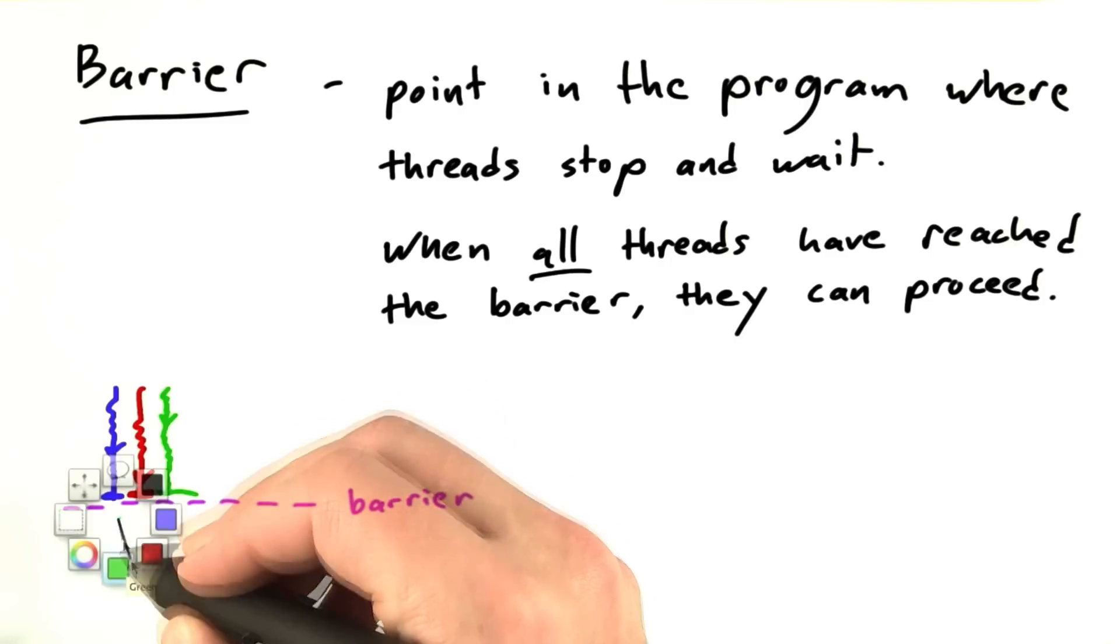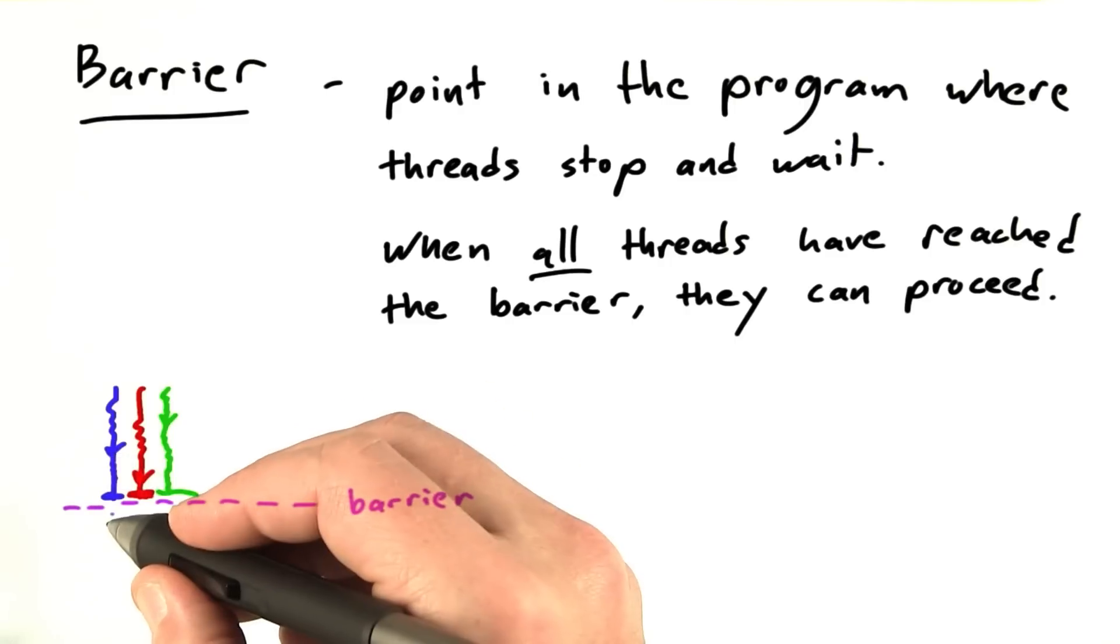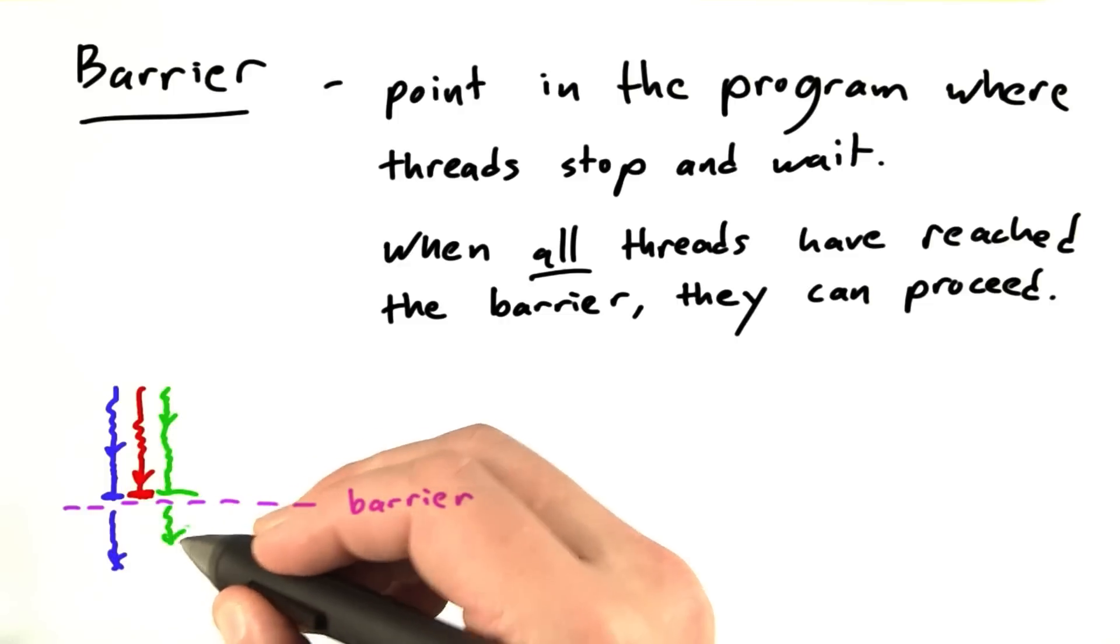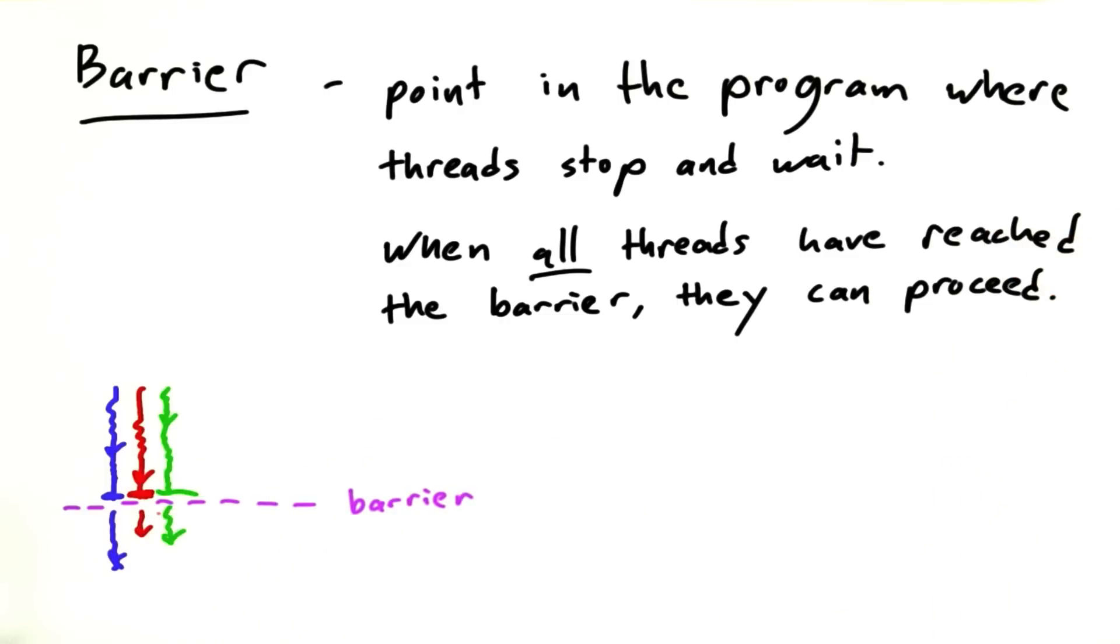And so they'll all proceed again and we don't actually know which one's going to go first. It might be that the blue one is the first out of the gate. Maybe green is next. Maybe red is last. So let's look at some code to illustrate this.